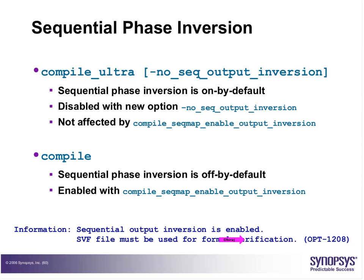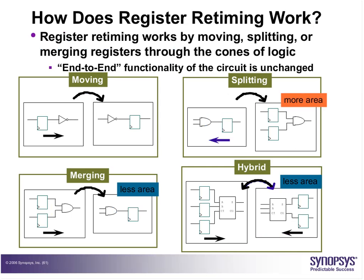Let us discuss the concept of register retiming. Register retiming is one of the most advanced synthesis techniques, where registers or flops are either duplicated, merged, or moved around the combinational logic blocks to reduce area or improve performance. There are four kinds of register retiming operations. In all four graphics, the left-hand side is before and the right-hand side is after the retiming.